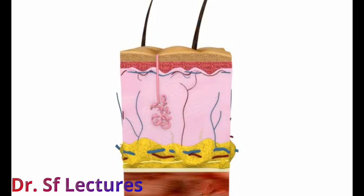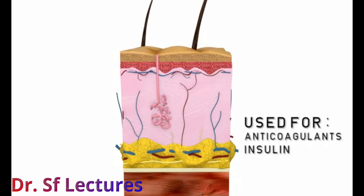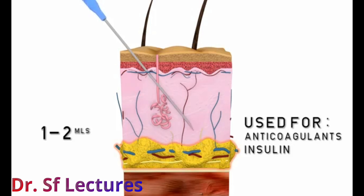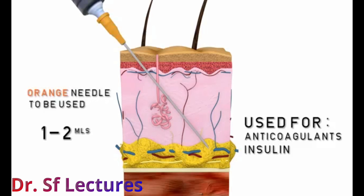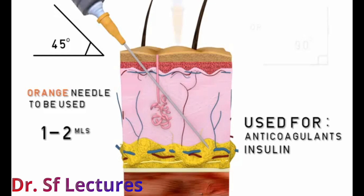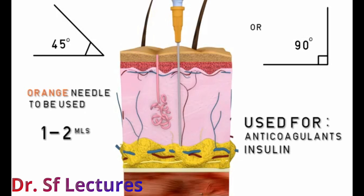The subcutaneous route is usually used when slow absorption medications are needed, for example anticoagulants and insulin. It is only suitable for the administration of 1 to 2 mils of medication and should be administered just below the subcutaneous layer. This is found by lifting the skin to raise the adipose tissue from the muscle layer, which will determine the injection angle. The nurse has to calculate whether using a 45 degree angle or a 90 degree angle to reach the subcutaneous site.